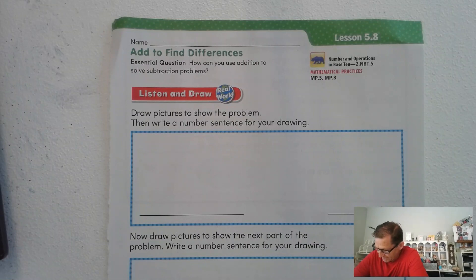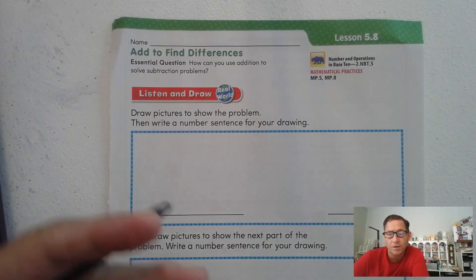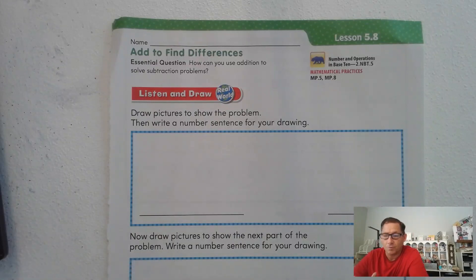So again, the numbers that I gave you were she had 25 markers and she gave three markers to Josh. So go ahead and pause the video, draw a quick picture or any type of picture to show the problem, and then I want you to write a number problem to show what your picture is showing you.